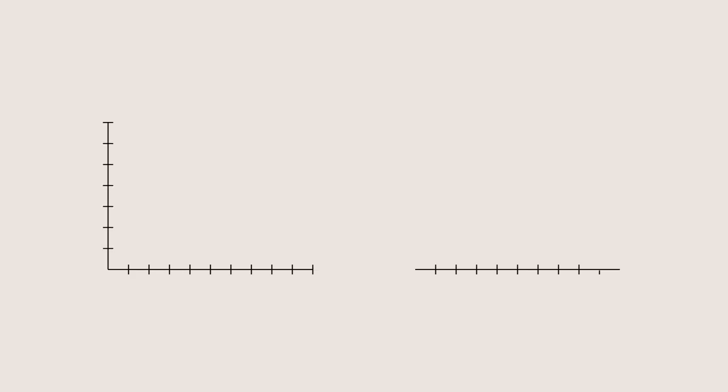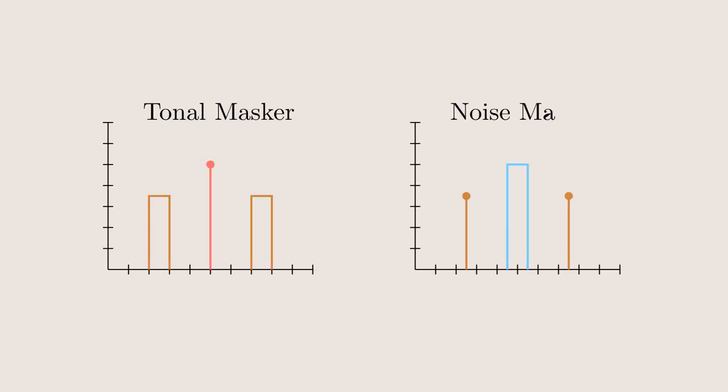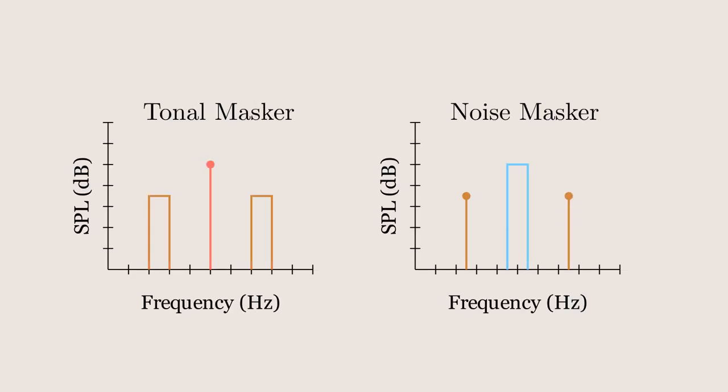This leads to an effect known as auditory masking, where a louder sound can completely cover up a quieter one. Masking sounds, or maskers, can be categorized into two groups: tonal and noise. Tonal maskers are where one loud frequency does the masking, and noise maskers are where a small band of continuous frequencies does the masking. Tonal and noise maskers generally work in the same way, but noise masks sounds much better than tonal maskers, so the distinction is important.